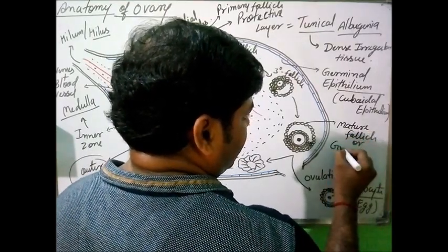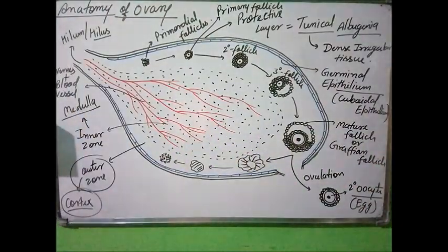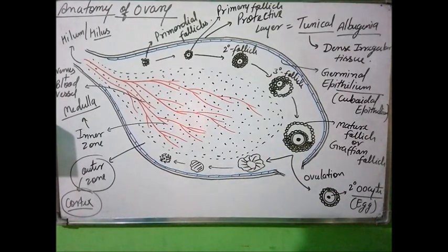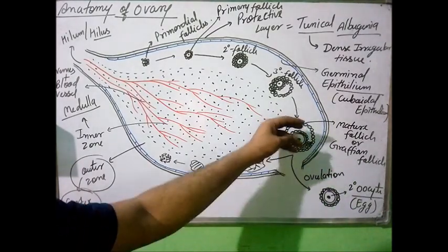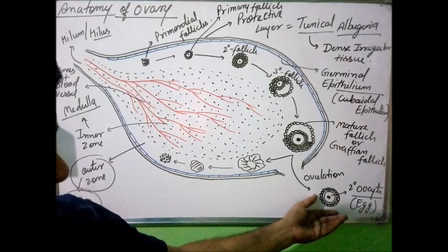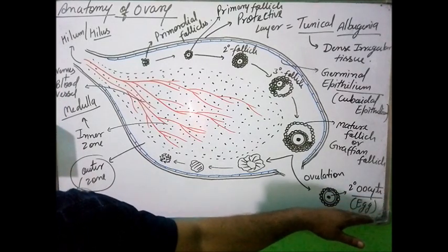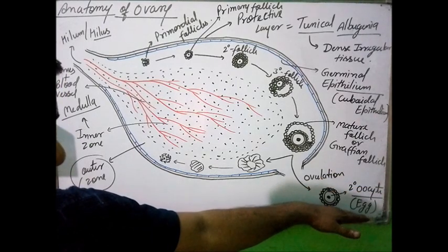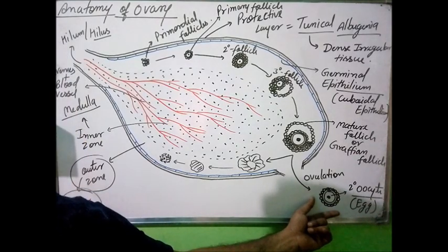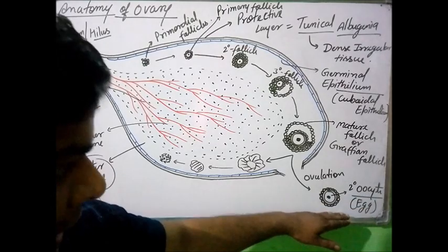The mature ovarian follicle is called the Graafian follicle. This Graafian follicle undergoes ovulation — it ruptures due to a high concentration of luteinizing hormone (LH) in the mid-period of the menstrual cycle, releasing a secondary oocyte with some follicular cells. This clump is considered the egg or ovum, but it is not the actual egg since it is a secondary oocyte; the remaining development completes only when a sperm penetrates and activates it.